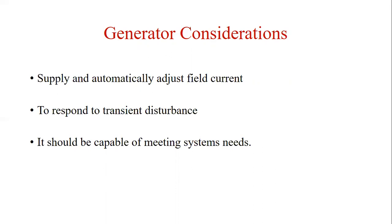In addition, the excitation system must respond to transient disturbances with field forcing consistent with the generator's instantaneous and short-term capabilities. The generator capabilities in this regard are limited by several factors: rotor insulation failure due to high field voltage, rotor heating due to high field current, stator heating due to high armature current loading, core heating during unexcited operation, and heating due to excess flux. The thermal limits have time-dependent characteristics and the short-term overload capability of the generators may extend from 15 to 60 seconds.